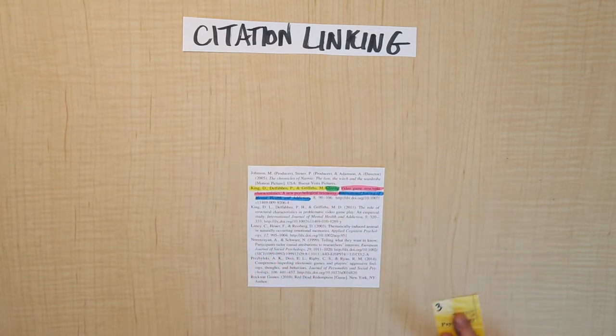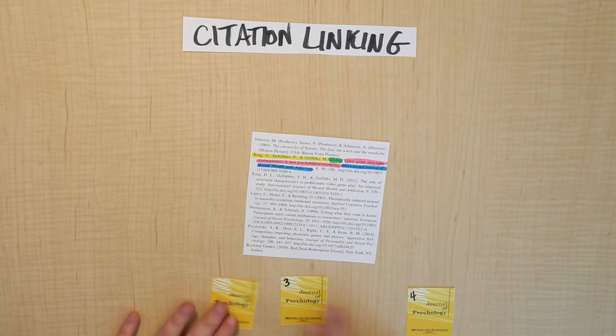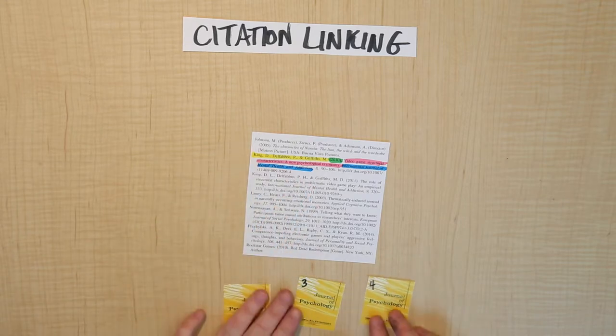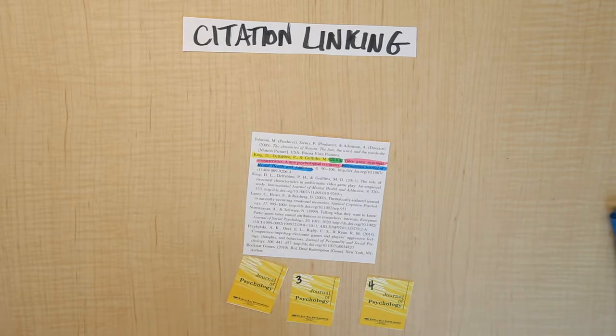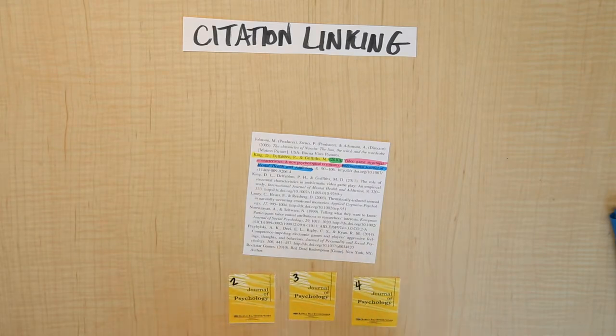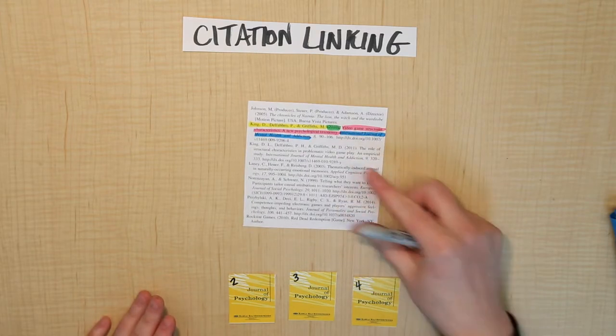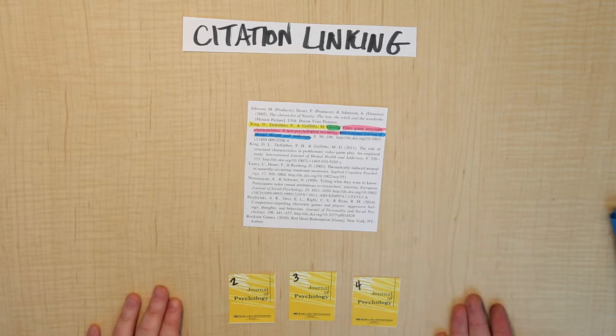As we talked about before, within a given year, there might be multiple issues of a journal published. And that information comes next. So let's say that these three were all published in 2010, and this was issue number two. This is issue number three, and this is issue number four. All of the ones that were published in the same year will have the same volume number. So let's say that this is the eighth year that the Journal of Psychology has been published. These would all be volume eight.